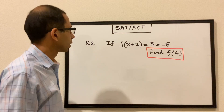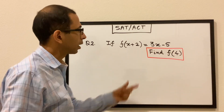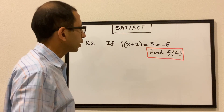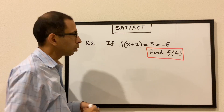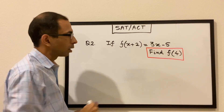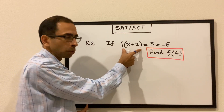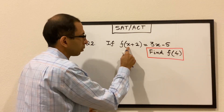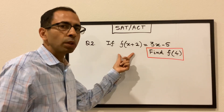Let's move to our second question. If f(x + 2) = 3x − 5, we have to find the value of f(4). The catch here is that we cannot just plug in x = 4, because that would give us the value of f(6). This is the definition of f(x + 2), not f(x). So if you plug in x = 4, this becomes 4 plus 2 which is 6 — we'd be finding f(6), which is not what's being asked.